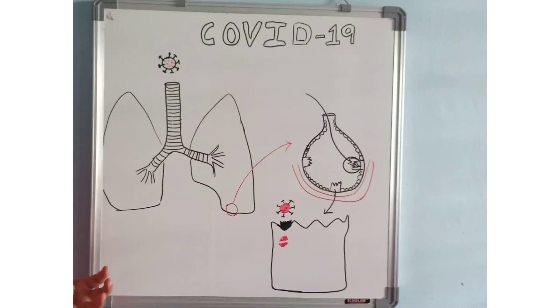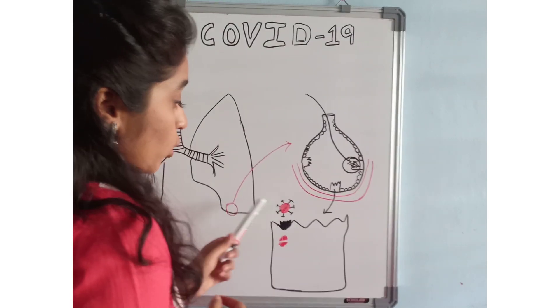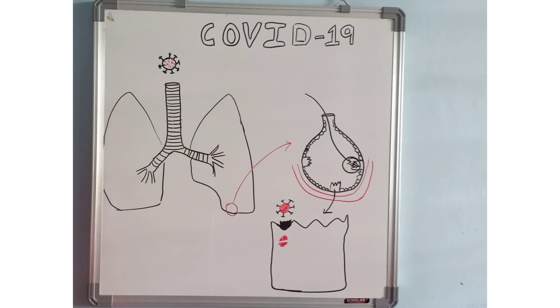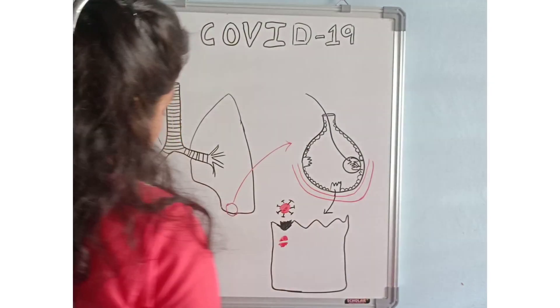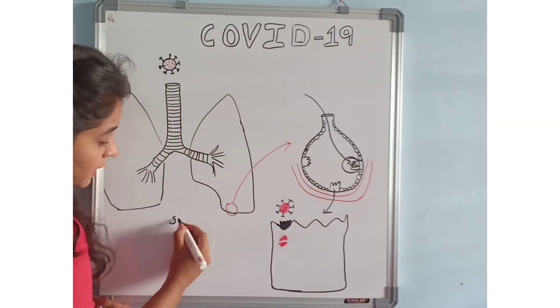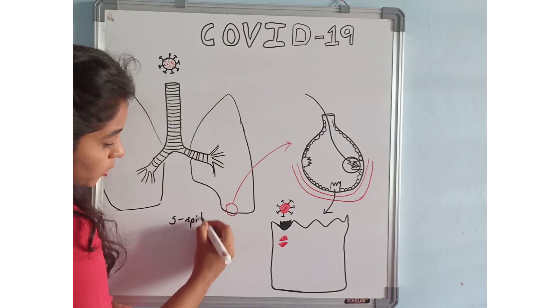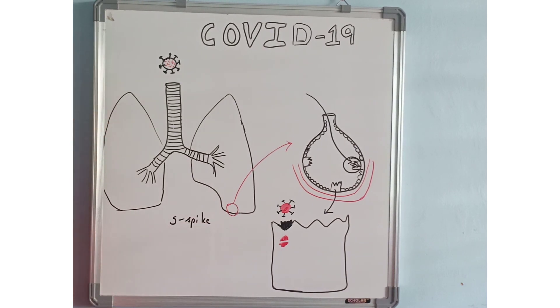This coronavirus is said to have spikes. When we observe them, we know that a particular spike known as S spike is known to us.